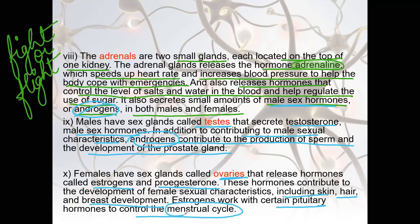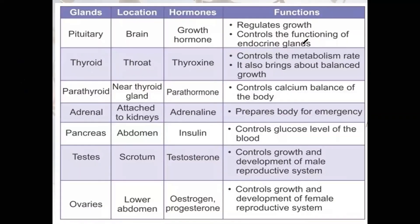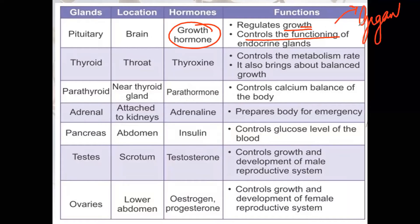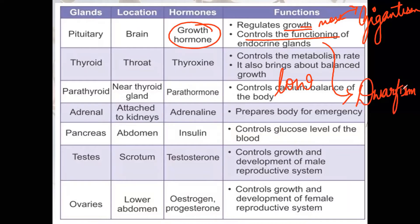Here there is one more slide with a picture of different glands, their location, and the hormones released by each gland. An important topic is the pituitary and growth hormone — it regulates growth. If there is an excess amount of growth hormone, there is a disease known as gigantism. If the secretion of growth hormone is too low, it leads to another disease called dwarfism.